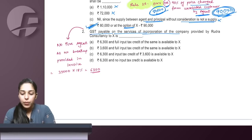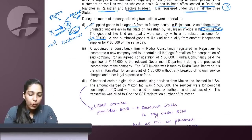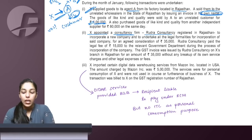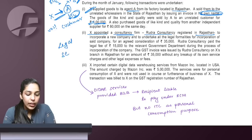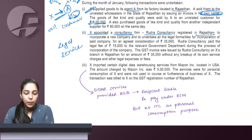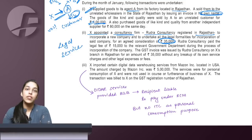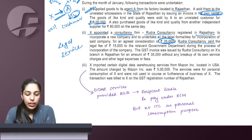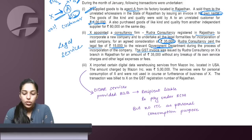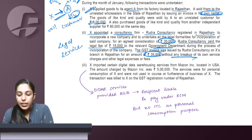MCQ 1 done. Next: X appointed Rudra Consultancy, registered in Rajasthan, to incorporate a new company and undertake all legal formalities. It's a legal service — so RCM may apply. The agreed consideration is 35,000, of which Rudra Consultancy paid legal fees of 15,000 to the relevant government department. The GST invoice was issued for the full 35,000 without any breakup. So actually, X paid Rudra 35,000, of which 15,000 was MCA government fees and 20,000 was Rudra's own fees.